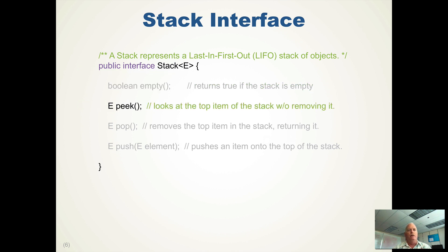The peak method looks at the top item in the stack without removing it. So it returns the top of the stack without affecting the stack. If the stack is empty, it will throw an empty stack exception.